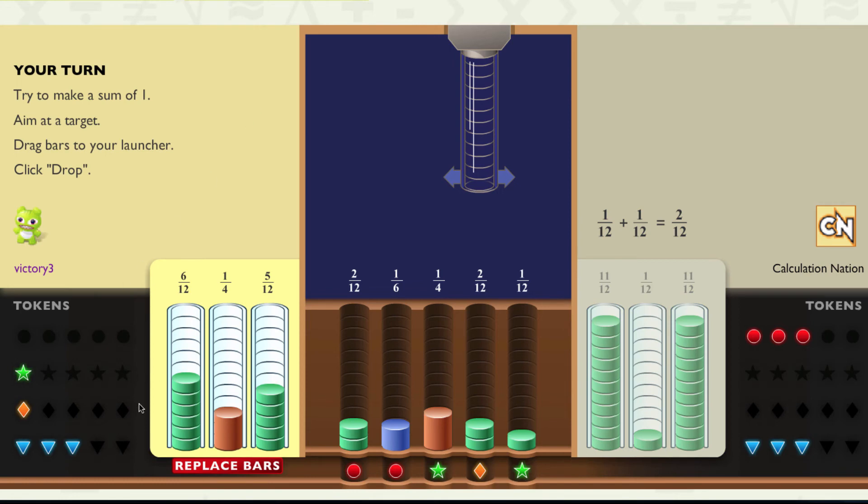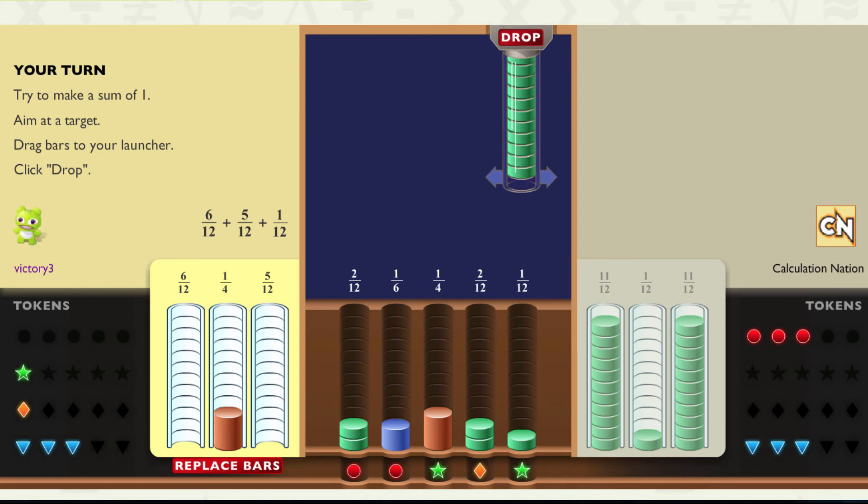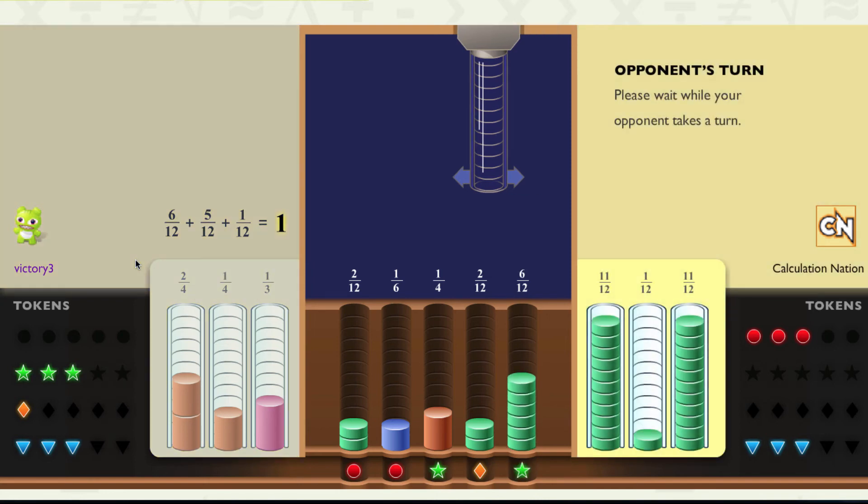Students are actually subtracting in addition to adding. Here, they're taking two fractions now, and they'll put them into the launcher, and see that after they put them in, they need just one more twelfth. That's, in effect, subtracting those two fractions from one.